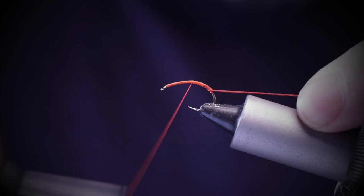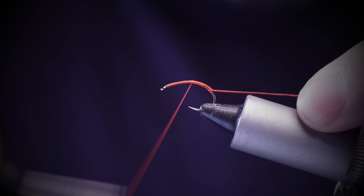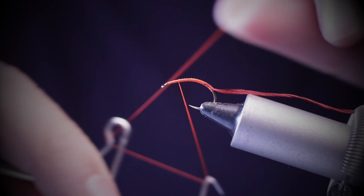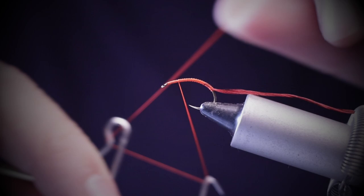Wrap up over that tag end, all the way back up to the start. Put your floss to one side and whip finish.